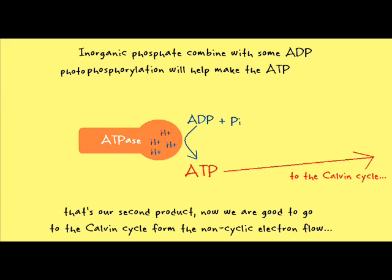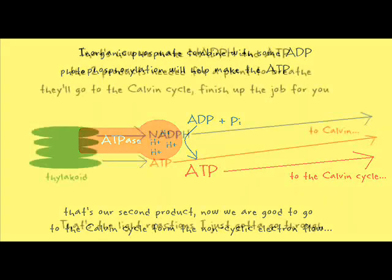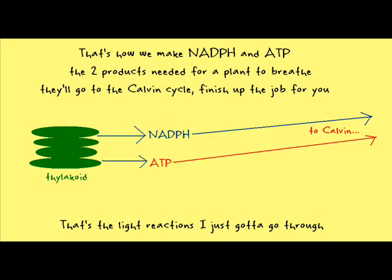That's our second product — now we are good to go to the Calvin cycle from the non-cyclic electron flow. That's how we make NADPH and ATP, the two products needed for a plant to breathe. They'll go to the Calvin cycle and finish up the job — that's the light reactions I just gotta go through.